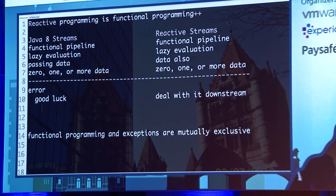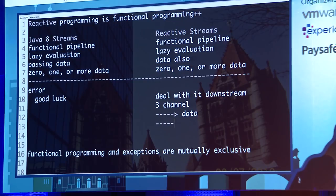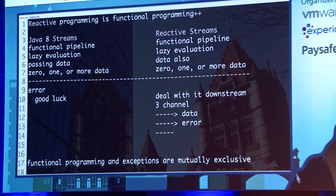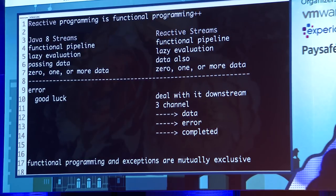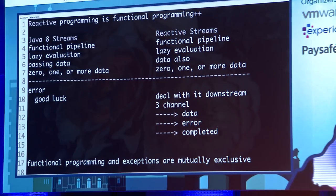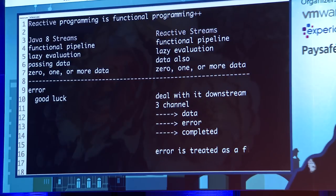In the case of reactive streams, it gives you three channels. The first is the data channel. The second is the error channel. The third is the complete channel. The complete channel tells you: I have no more data for you. The error channel says something went wrong — it is treating error as data, as a first-class citizen.